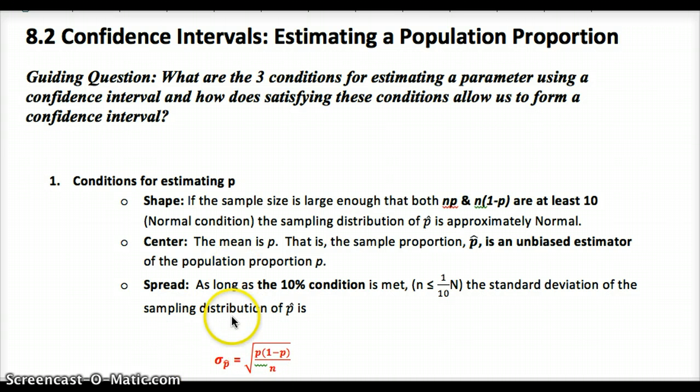Keep in mind, we're using p-hat to estimate the parameter now, whereas last chapter we talked about already knowing the parameter. This time, we're looking at it more realistically, that we don't know what that is, we're using our sample to estimate it. Shape, center, and spread. Shape: the normal condition, so np and n times 1 minus p are at least 10. Center: unbiased, so there needs to be an SRS, a random assignment. Spread: 10% condition, don't sample more than 10% of the population, and then we can use this formula.